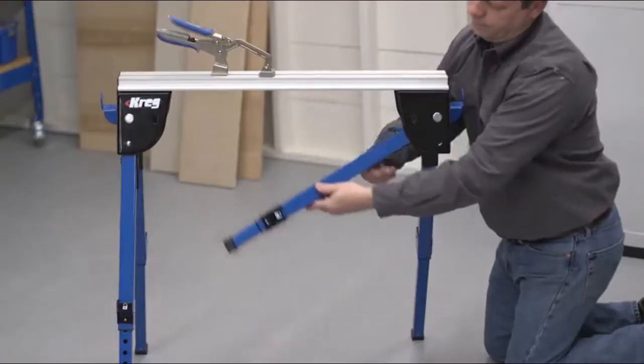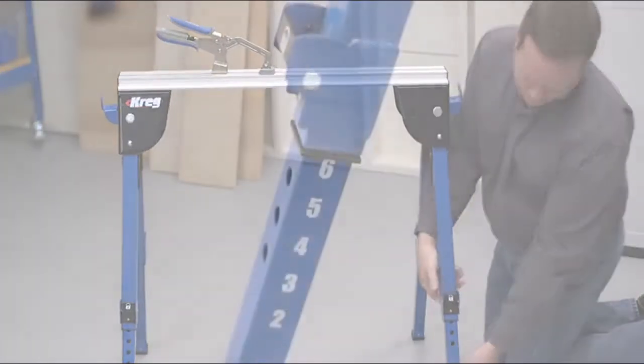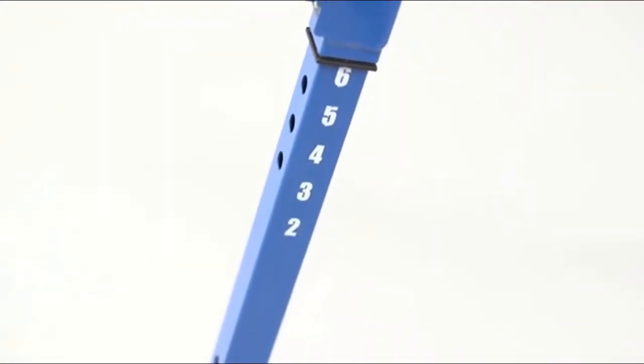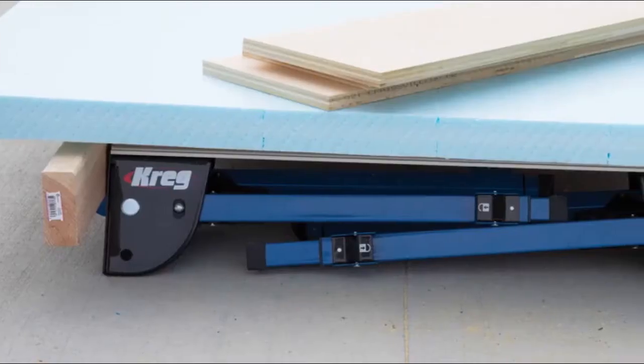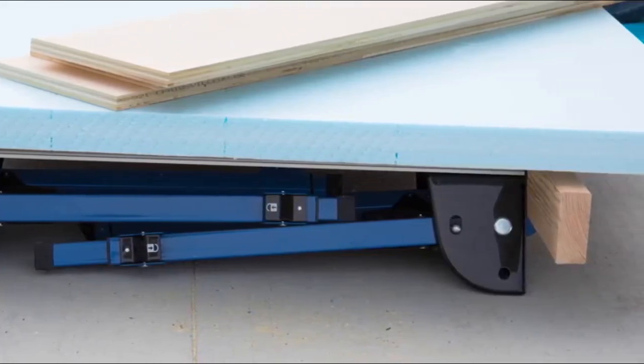Those features start with sturdy, adjustable legs. They fold out and lock in place securely and can be set at six working heights to match your needs and your tasks. The legs also fold completely away, which allows you to set up a handy ground-level work platform.